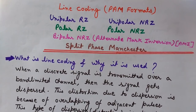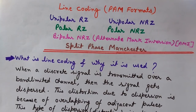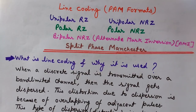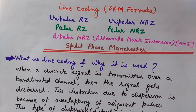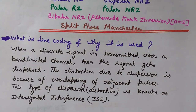When a discrete signal is transmitted over a band-limited channel, the signal gets dispersed — we see a distortion in the signal. This distortion due to dispersion is because of overlapping of adjacent pulses. When we transmit discrete signals in binary format over a band-limited channel, the output received at the receiving end is not only because of the transmitting bit but is also affected by adjacent bits. This is known as inter-symbol interference, or ISI.